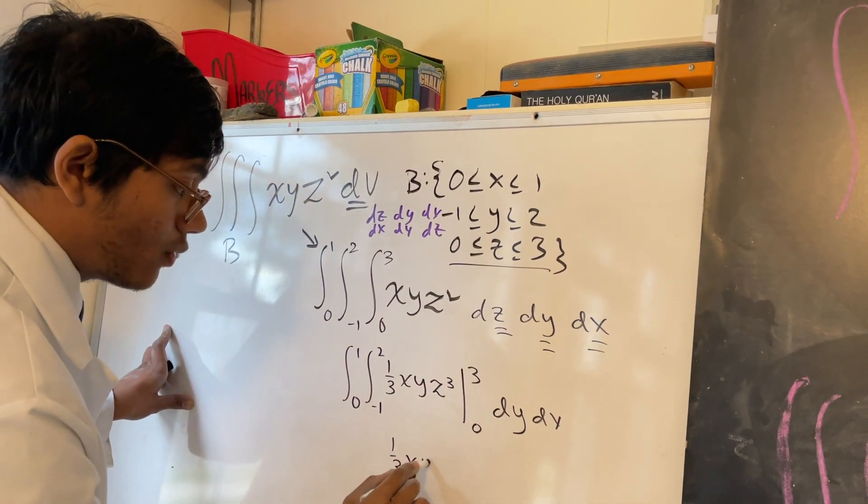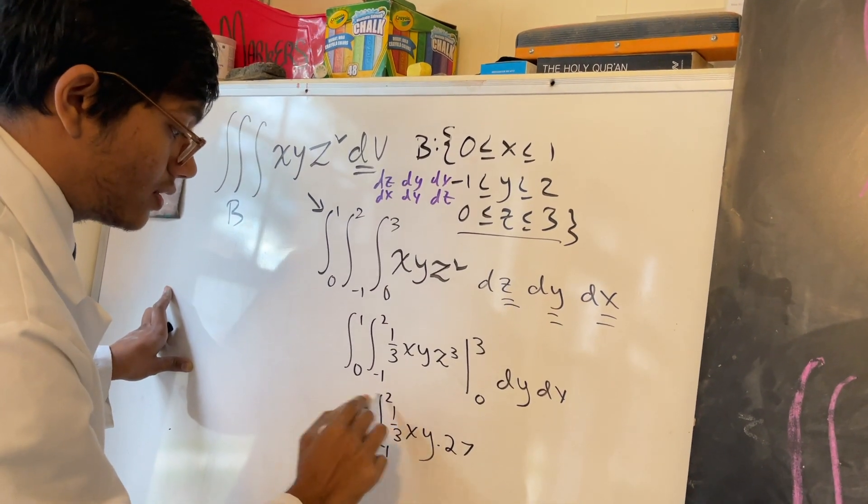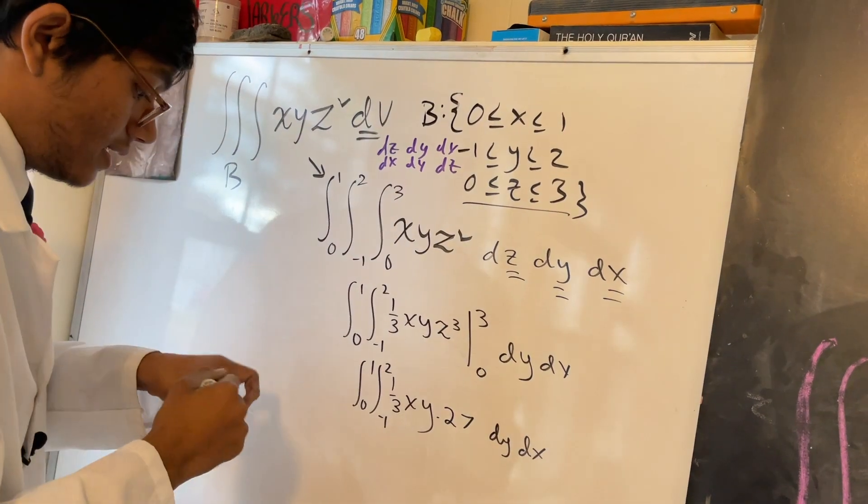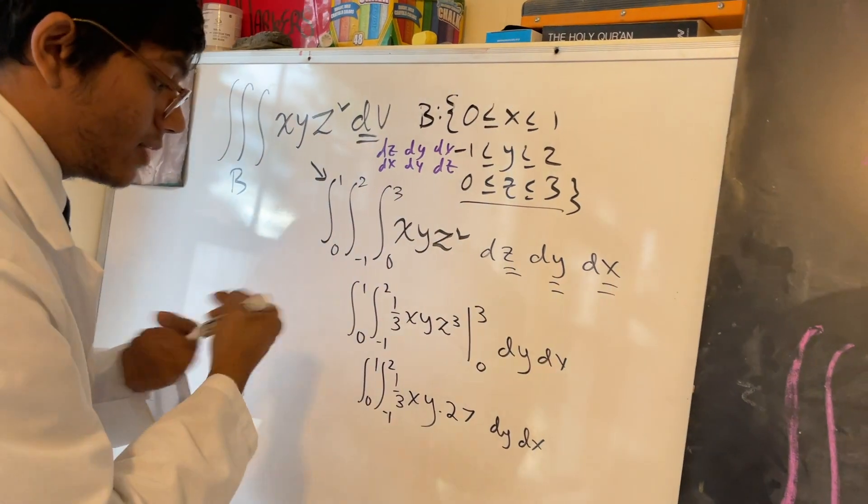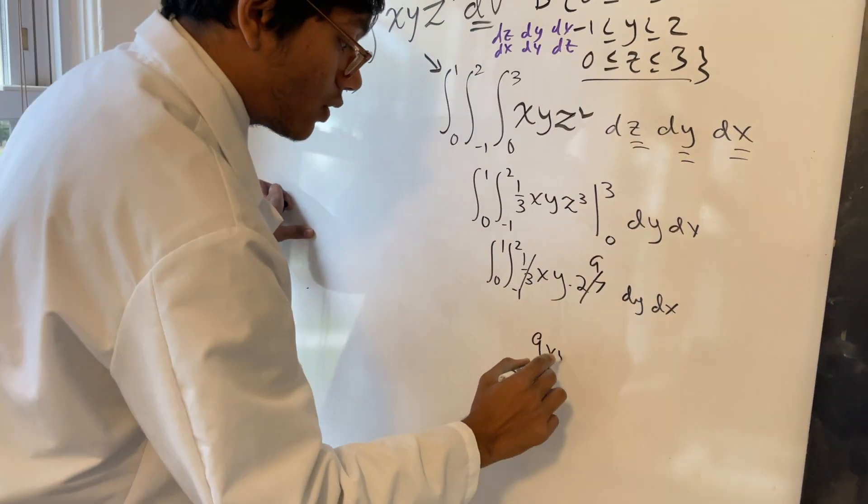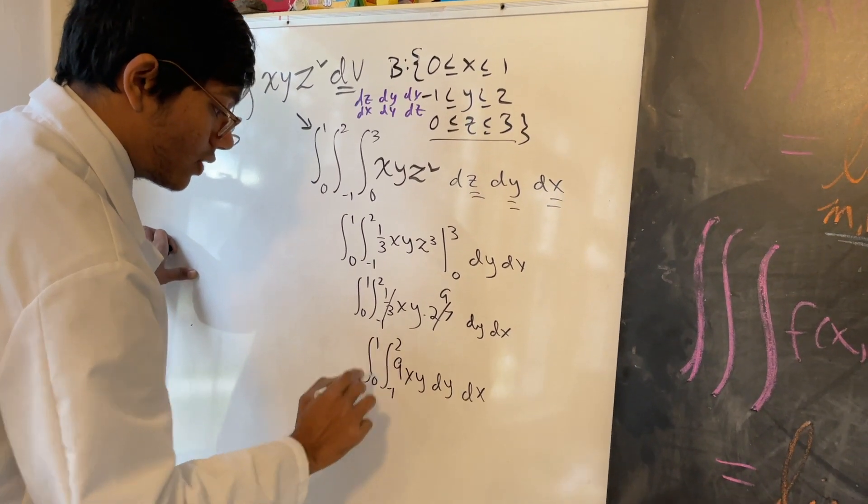So I'm going to have what? One-third XY. If I plug in 3 over here, I'll get 27. And I'll have two more integrals dy dx on the outside. And one-third goes into 27 how many times? That's going to be 9. So I'm left with 9XY dy dx from -1 to 2, from 0 to 1.